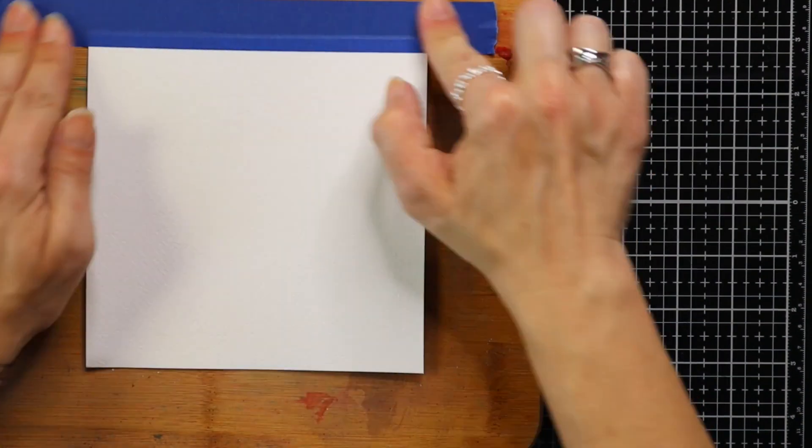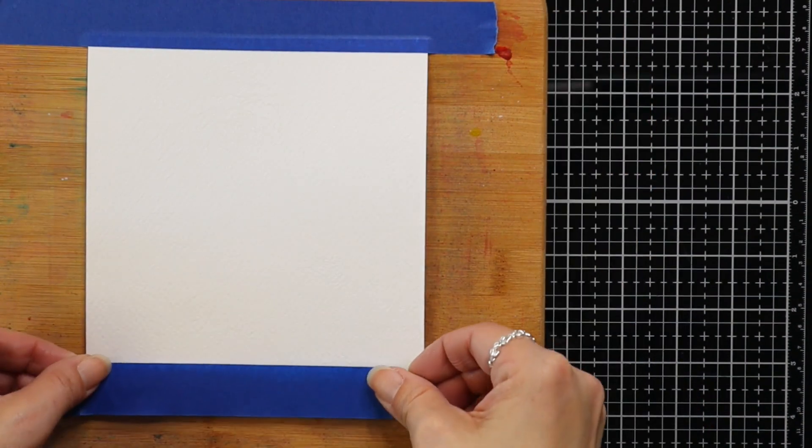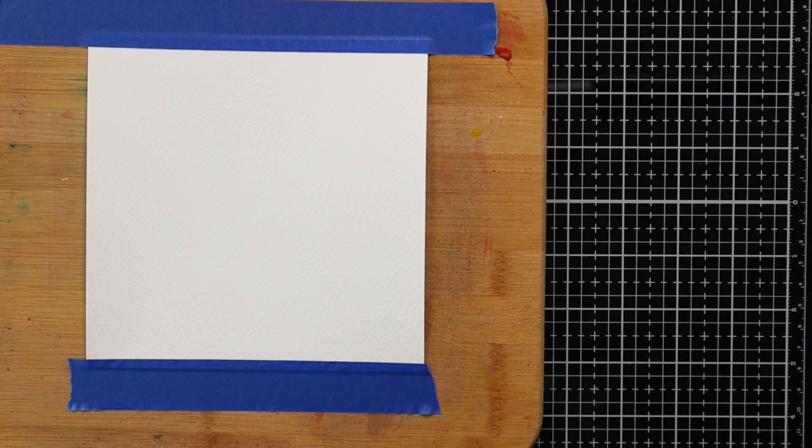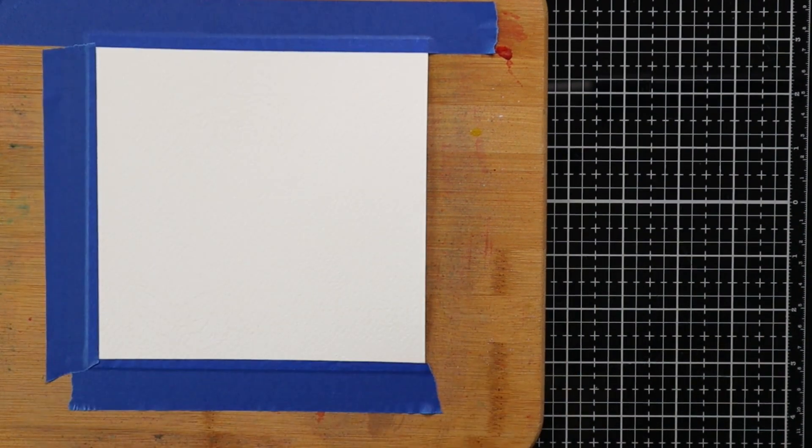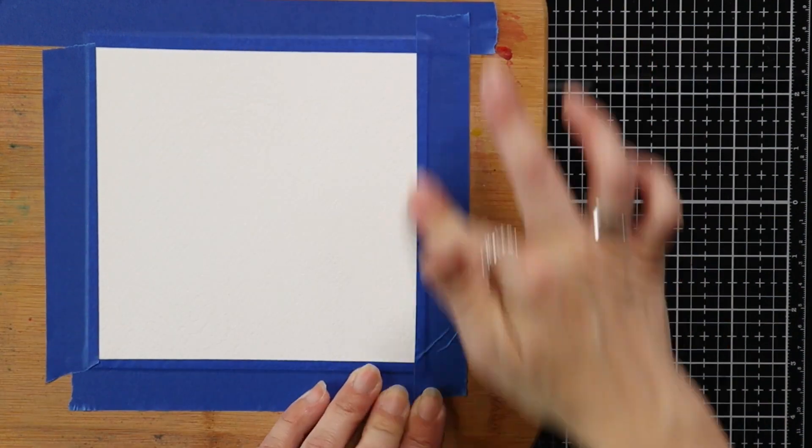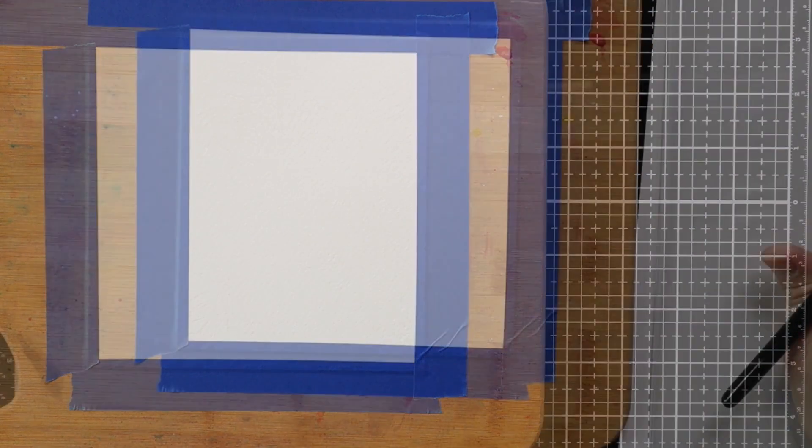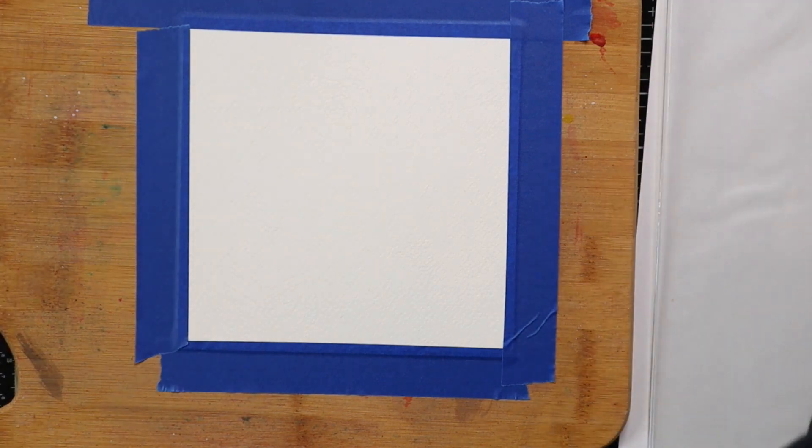Next I'm taking that heat embossed panel and I am going to attach it to a hard board. I actually have just a cutting board here and I'm attaching it with some blue painter's tape. I want to make sure this is secured down because I'm going to be adding a lot of water and I don't want my paper to curl or warp while I'm working on it.